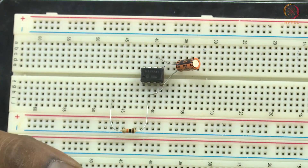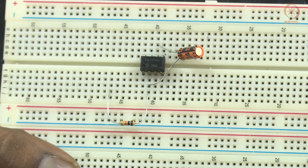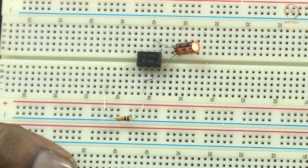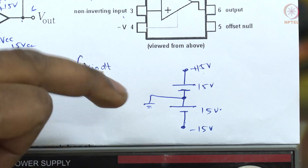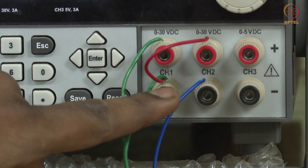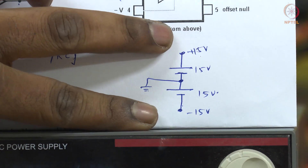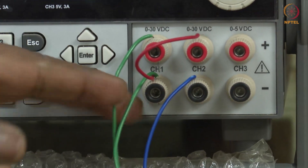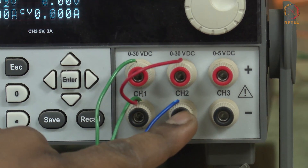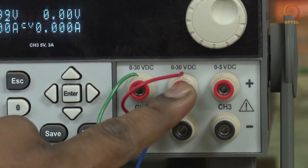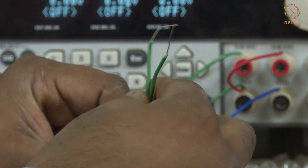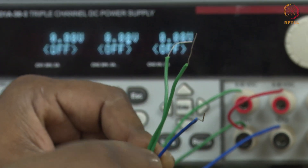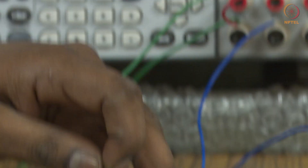After making these connections, we give the biasing voltage to the operational amplifier. The circuit requires a dual power supply of +15V and −15V. We have two positive power supplies connected in series: we connect the negative of one to the positive of the other, and take three wires — one at +15V, one at −15V, and one ground.